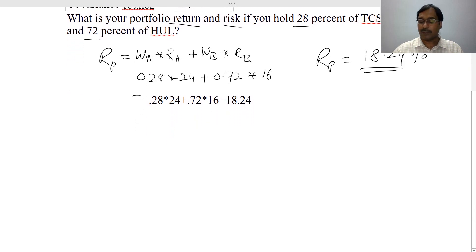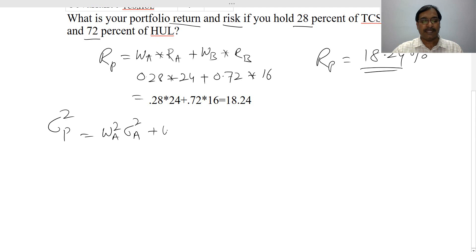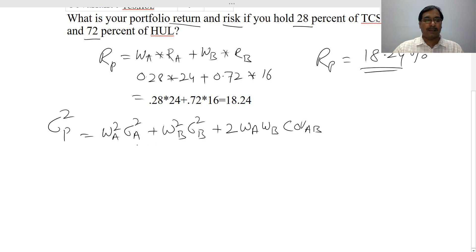Now I will write the formula to calculate portfolio variance. Variance of a portfolio equals weight squared of A times variance of A, plus weight squared of B times variance of B, plus 2 times weight of A times weight of B times covariance between A and B. Using this equation, we calculate the portfolio variance. This is similar to the (A + B)² expansion.